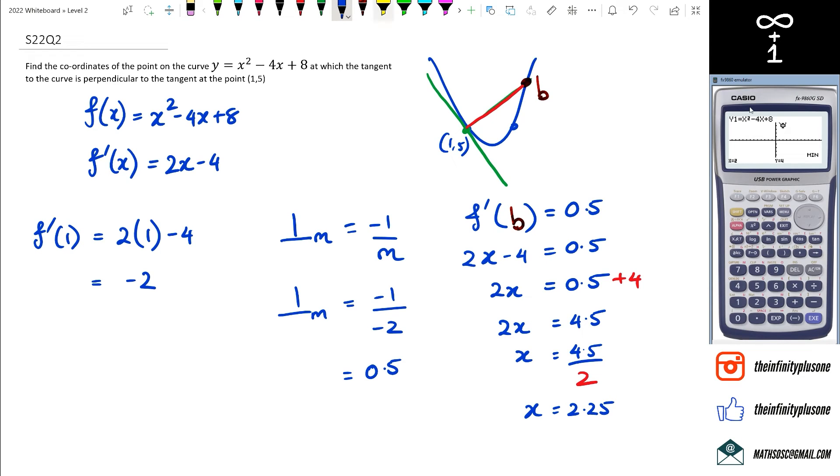Now, the question is asking us to figure out what the coordinates are. So we need to give the y value. So we're going to go back here and just work out what the y value is. So it's going to be 2.25 squared minus 4 times 2.25 plus 8. And I'm just going to kind of throw this in the calculator real quickly.